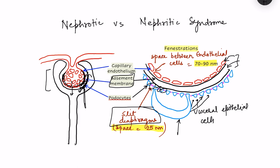The slit diaphragm contains important proteins from the foot processes of the podocytes — most notably nephrin and podocin. Mutations in the genes responsible for producing these proteins lead to problems in the slit diaphragm and therefore problems in filtration across the glomerular filtration barrier.